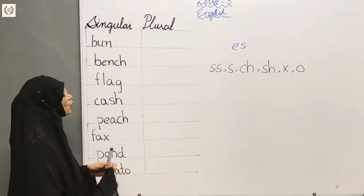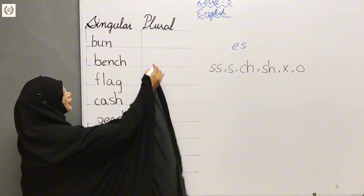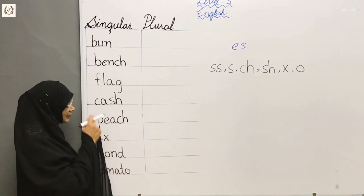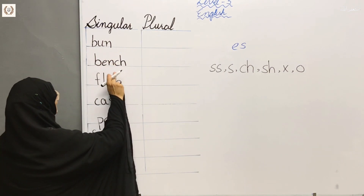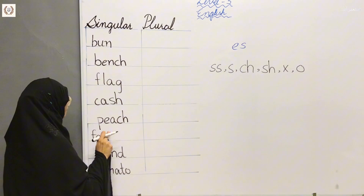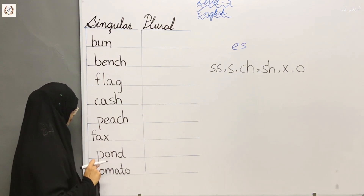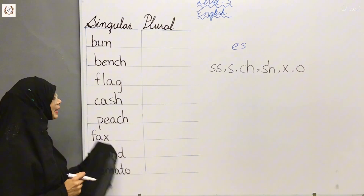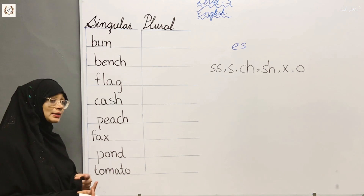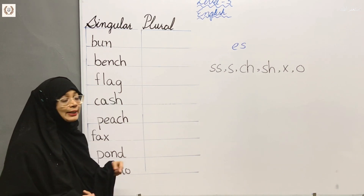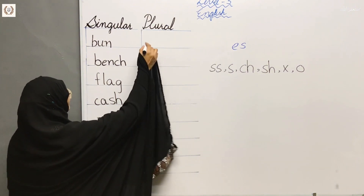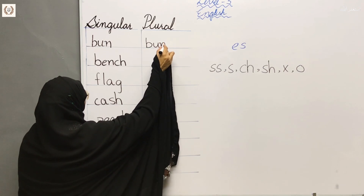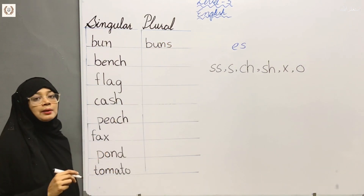S or ES? B-U-N. What does it mean? B-U-N — what is its plural? Let's look at your copy and check if you have the right words. Bun, batch, flag, cash, peach, fax, ponds, tomato — these are the words you have. The first word is B-U-N, Bun. We add S to the end: Buns.